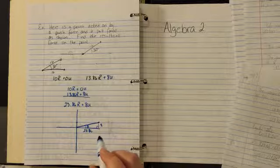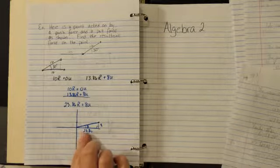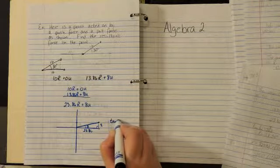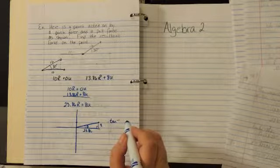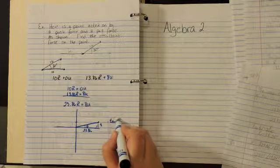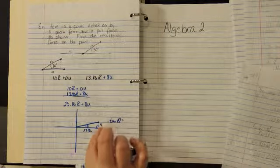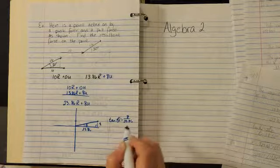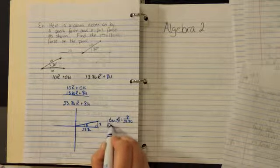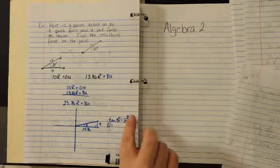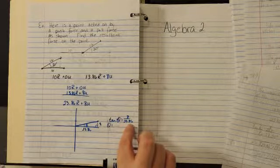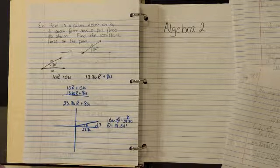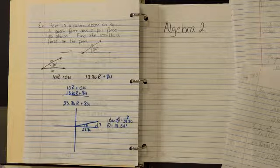To find the theta, we're going to take the tangent inverse. The tangent of theta is going to equal the opposite over the adjacent. So that's 8 divided by 23.86. So theta is going to equal the inverse tan of 8 over 23.86, which equals 18.54 degrees. So that's our theta.